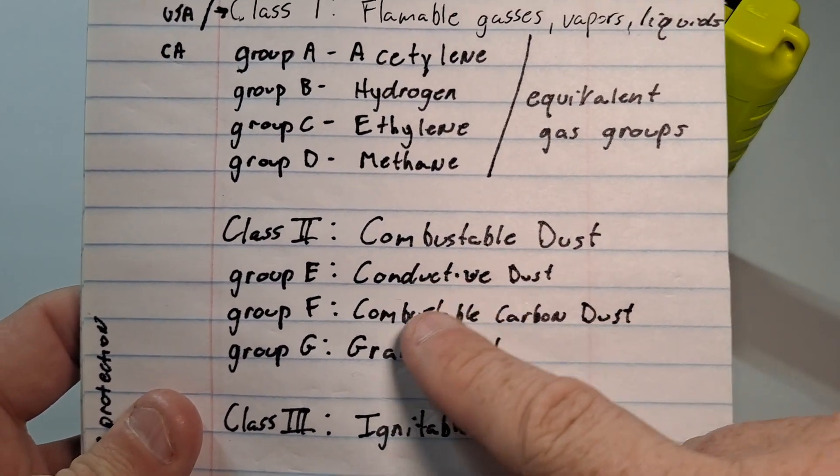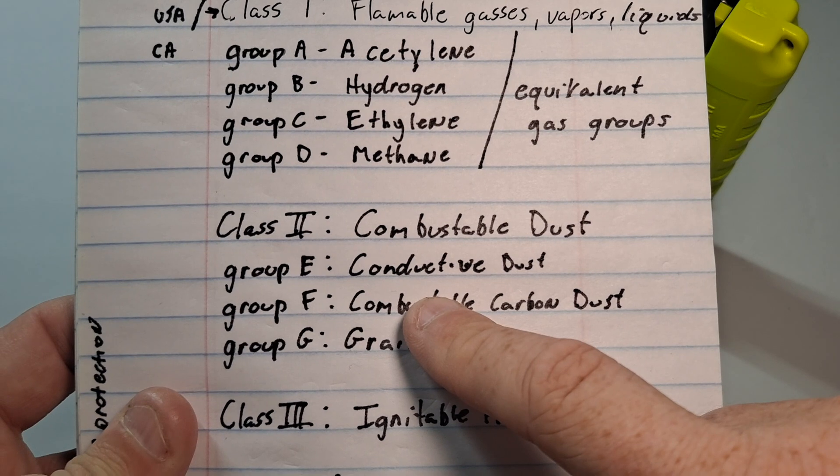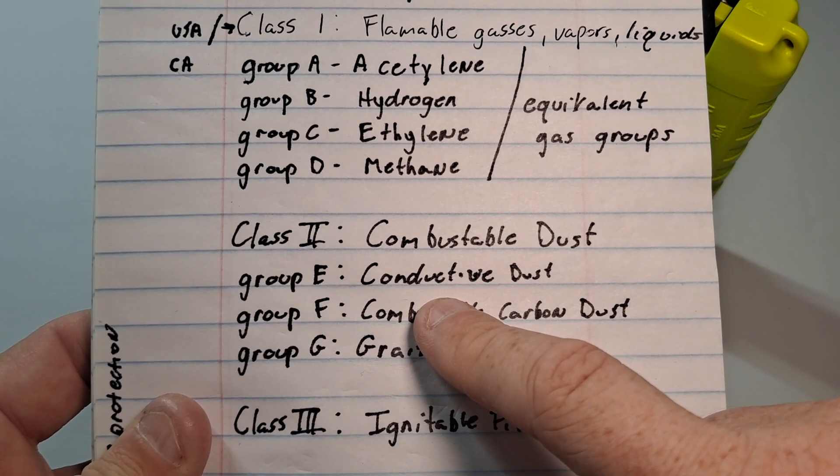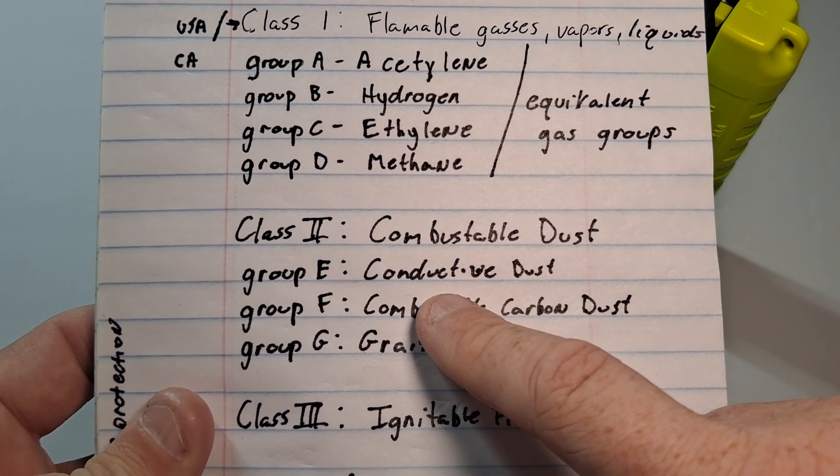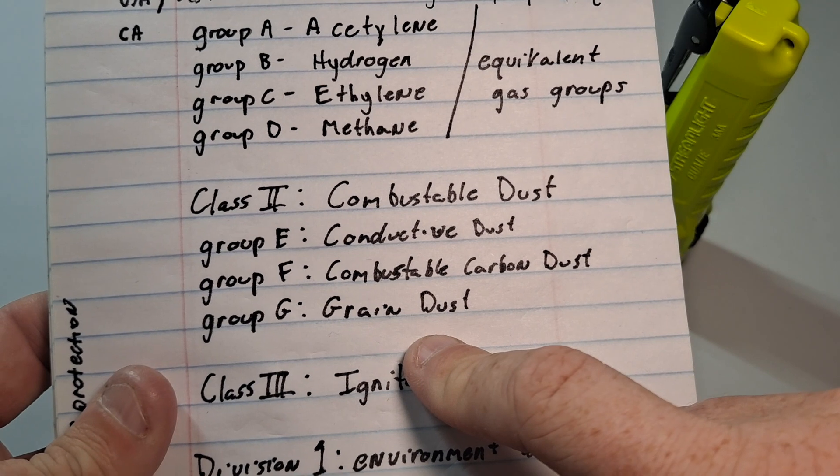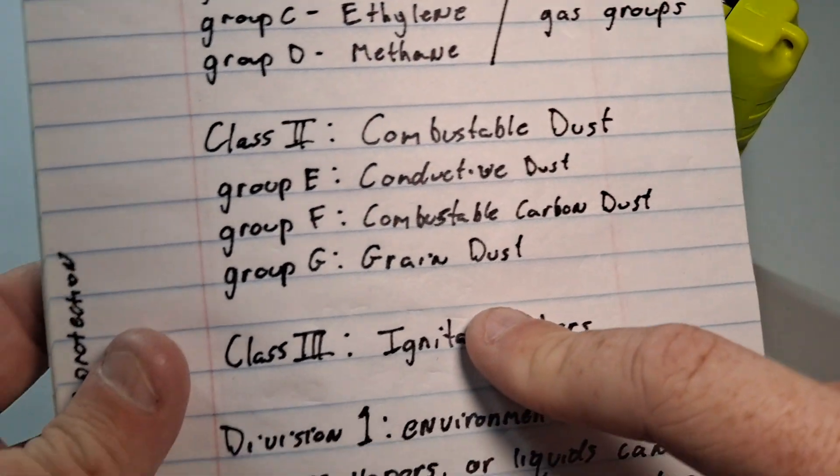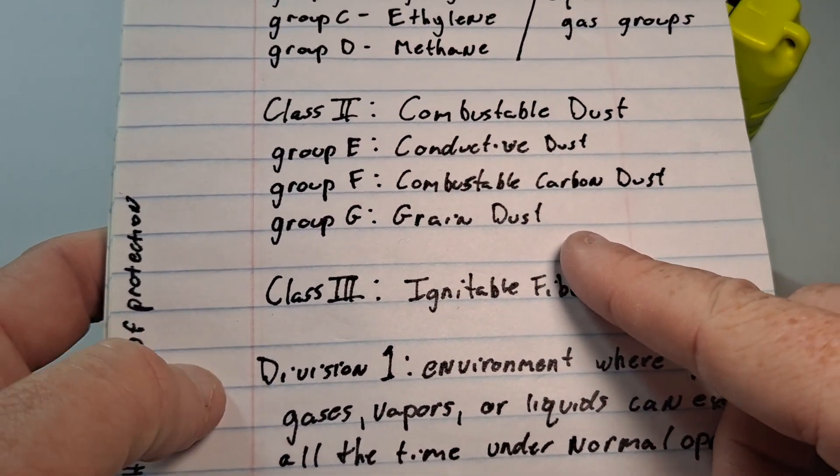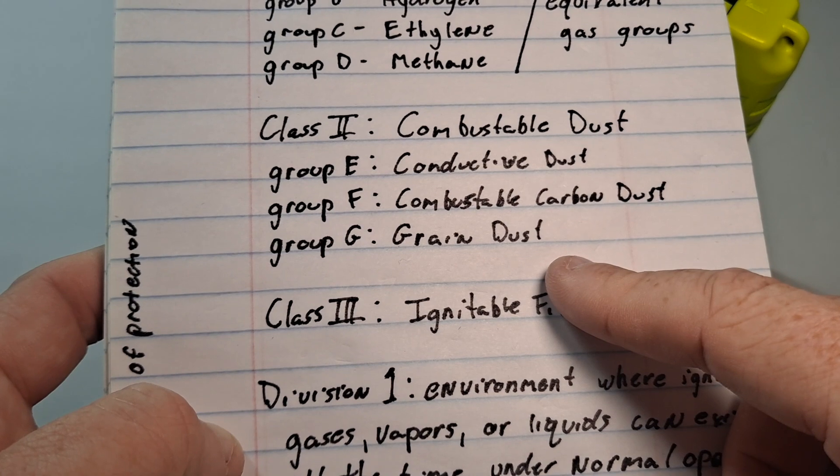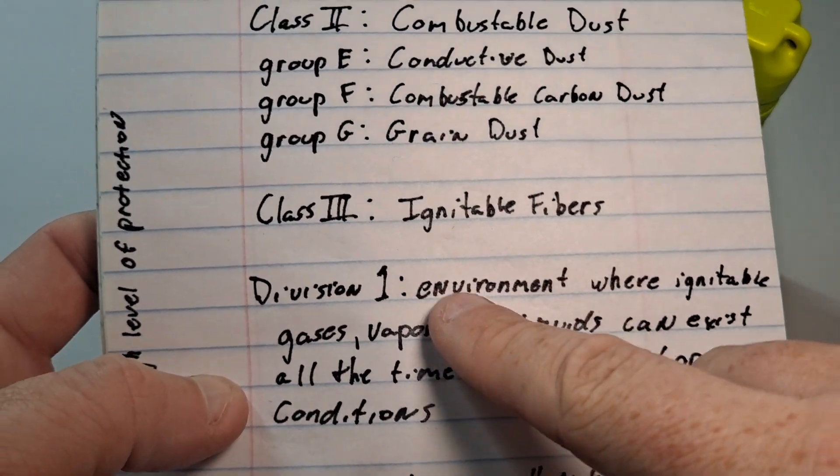Class two combustible dust. Group E conductive dust. So types of sand or types of gritty material that conduct electricity. Group F combustible carbon dust and group G grain dust because a lot of people don't realize that grain silos are just an explosion waiting to happen. They have things to help mitigate the dust in them but the dust in the silos get electrically charged. You just need an outlet or a ground and poof one of those things explode. That's why they're all in the shape of rockets. Just kidding.